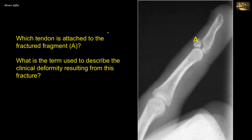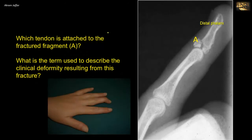Which tendon is attached to the fractured fragment A and what is the term used to describe the clinical deformity resulting from this fracture? This radiograph shows an avulsion fracture from the distal phalanx of a finger. Clinically, the deformity is called mallet finger.